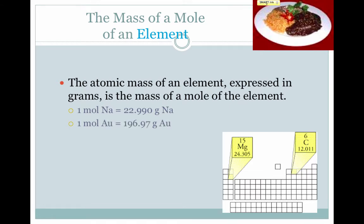Likewise for gold. If you find gold on the periodic table, you'll see that the mass of 6.02 times 10 to the 23rd atoms of gold, or one mole of gold, is 196.97 grams. Take a second and see if you can find the mass of one mole of vanadium, V. According to your periodic table, the mass of one mole of vanadium is 50.94 grams.